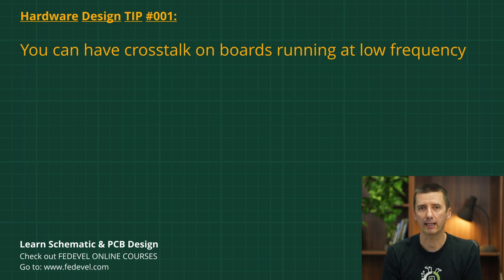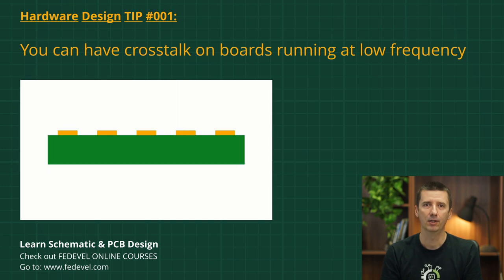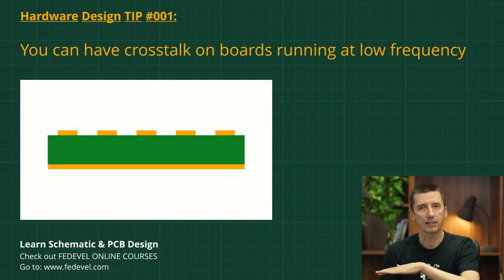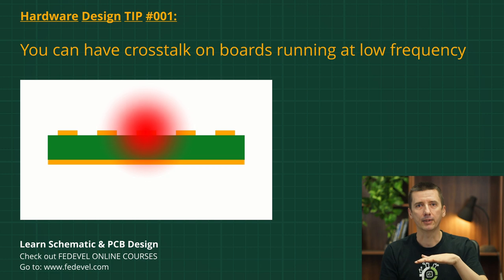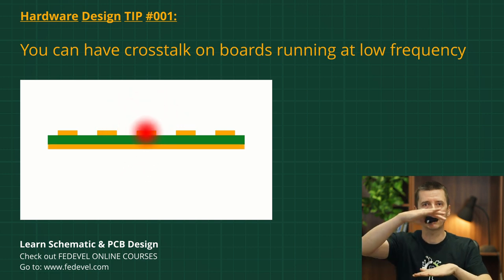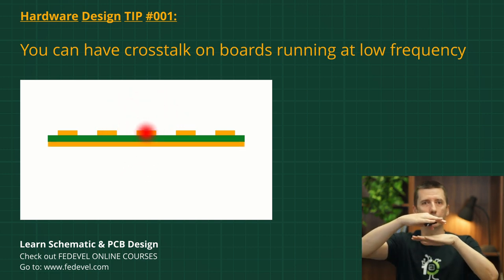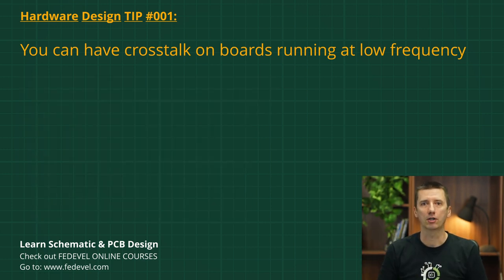Be super careful about crosstalk. There are a number of techniques to minimize it. For example, use a solid ground plane and bring it as close as possible to your tracks, or slow down the signal edges.